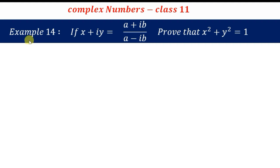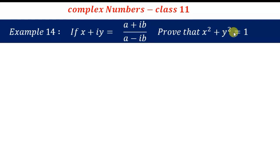Hello students, in this video we'll solve Example 14 from complex numbers — a very important problem. The question is: if x + iy equals (a + ib)/(a - ib), prove that x² + y² = 1. To prove this, we need to get the values of x and y so we can add them together and prove it equals 1.